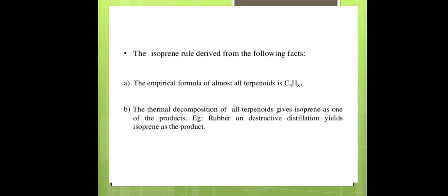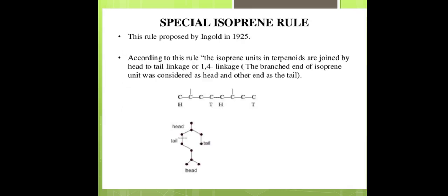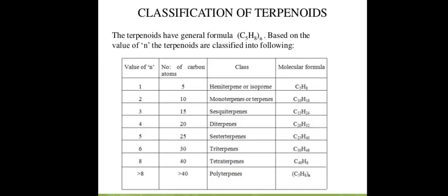The isoprene rule is derived from the following facts: the empirical formula of almost all terpenoids is C5H8, and thermal decomposition of all terpenoids gives isoprene as one of the products — for example, rubber on destructive distillation yields isoprene. The special isoprene rule, proposed by Ingold in 1925, states that isoprene units in terpenoids are joined in a head-to-tail (1-4) linkage, where the branched end is considered the head and the other end the tail.